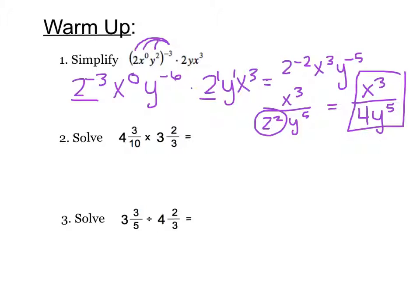Our next problem tells us to solve, and we are multiplying mixed fractions. To work with these, remember we have to change them into improper fractions first. 4 times 10 is 40, plus 3 is 43 over 10, times 11 over 3. I always like to check to see if anything would simplify, and in this case nothing does. So we can multiply straight across, and we end up with 473 over 30, which cannot simplify nicely.